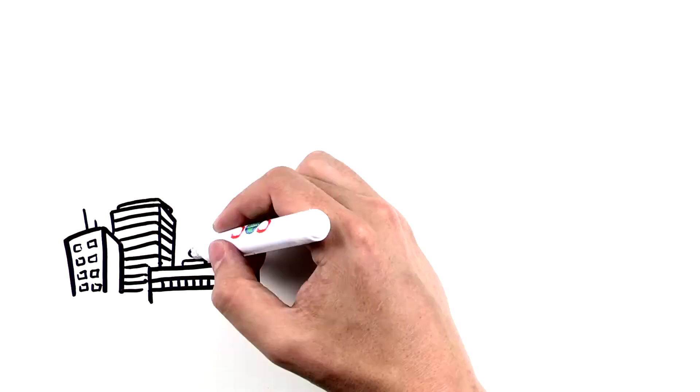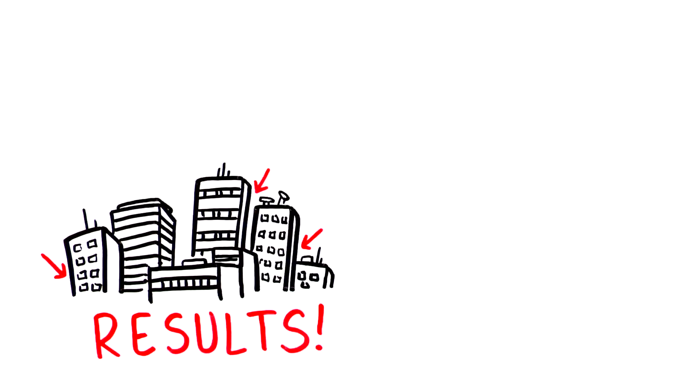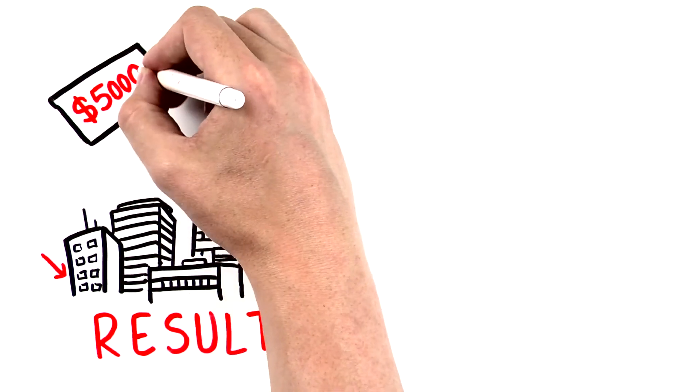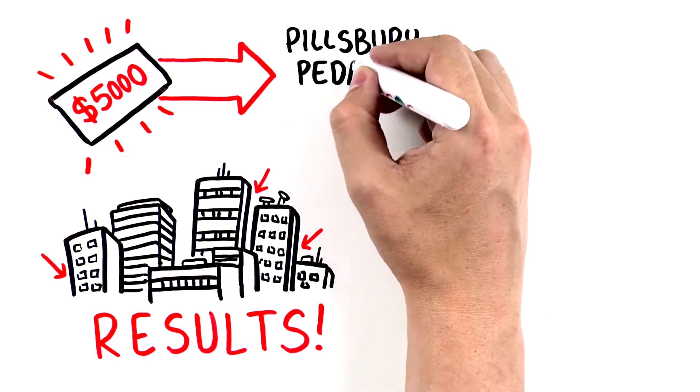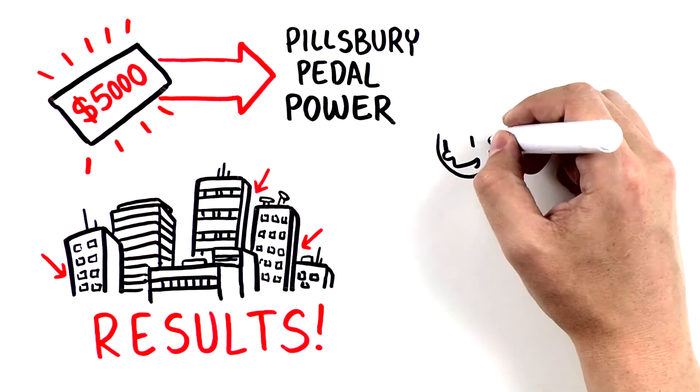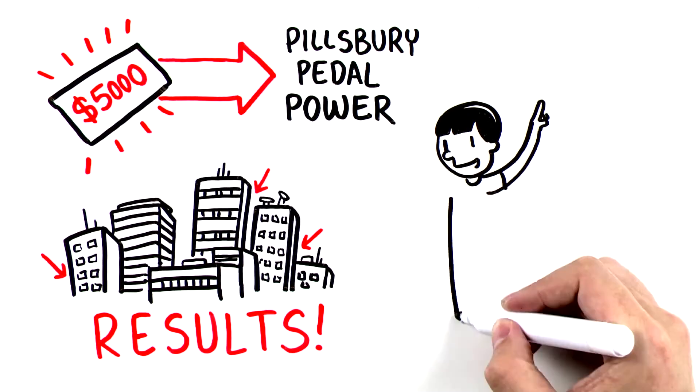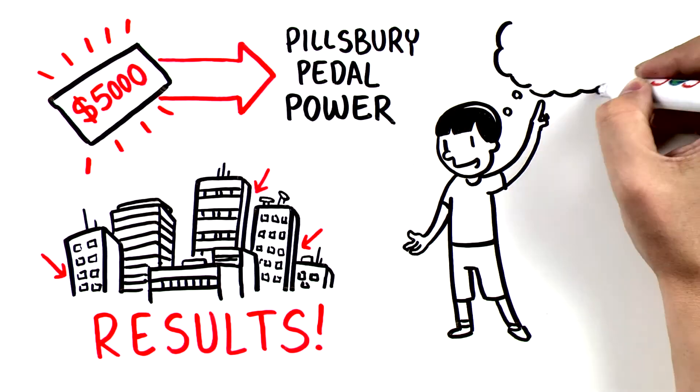And powerful results are already easy to see around the city. For example, last spring, Save Our Schools awarded one of our first grants of $5,000 to Pillsbury Pedal Power, an after-school program created by a 4th grade student and his peers at Pillsbury School in North Minneapolis.